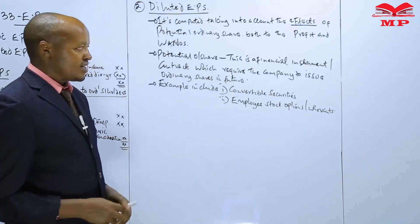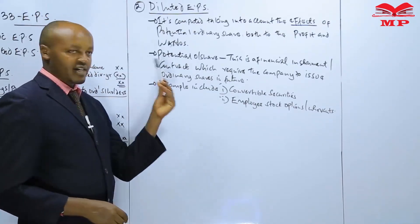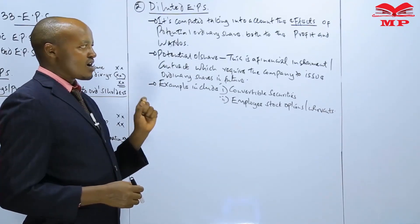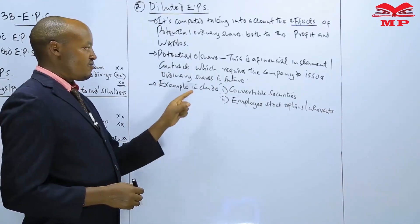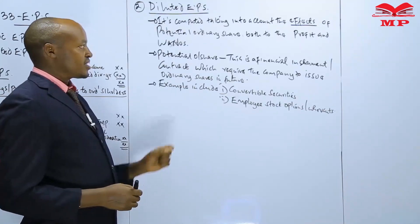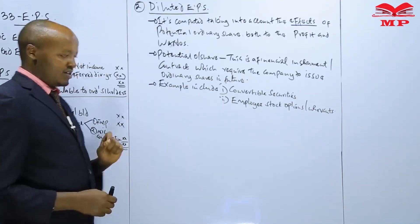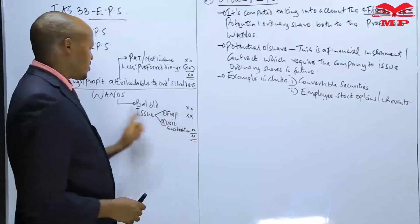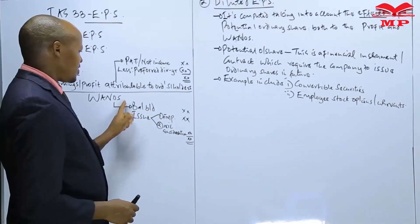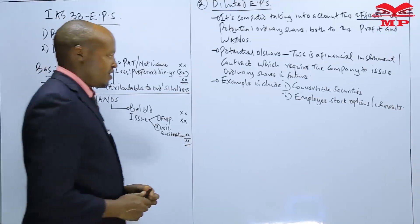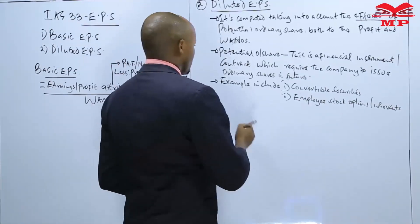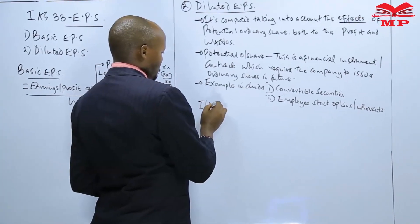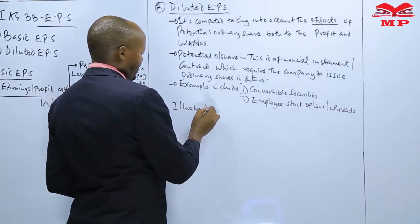When computing the diluted earnings per share, we take into account the effect of those particular potential ordinary shares on both the profit attributable to ordinary shareholders and also on the number of shares.